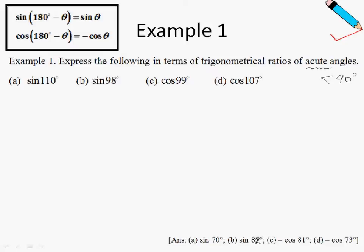Sine of 110 degrees can be expressed as sine of 180 degrees minus 70 degrees. I write it this way because I want it to match the left-hand side of the first formula. So 70 degrees is my theta, and using the formula, this becomes sine of 70 degrees.